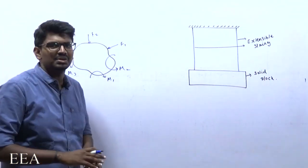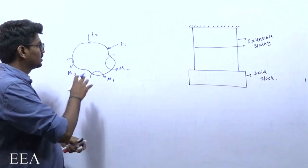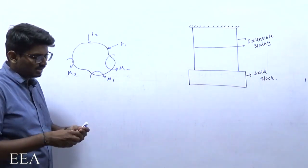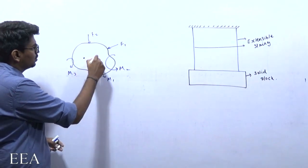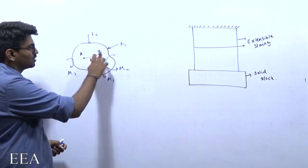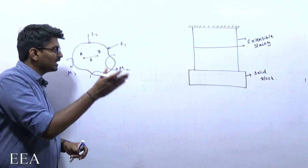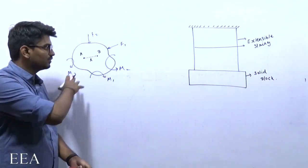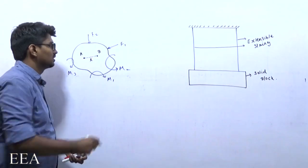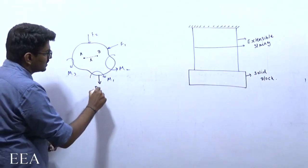Consider a body subjected to a large number of forces — either a large number or a single force, that is not an issue. Even after application of this much force and moment, I take two points A and B and draw a distance L between them. If the distance between these two points does not vary before or after application of the forces, then those types of bodies are called rigid bodies.